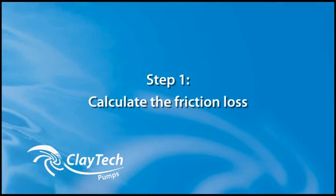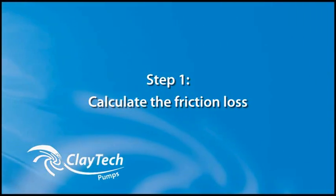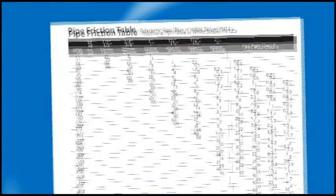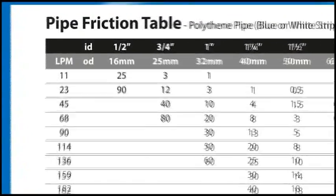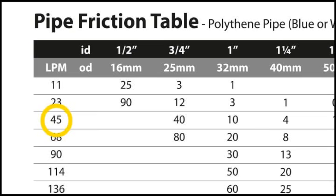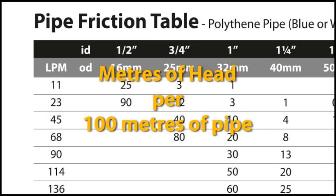The first step is to calculate friction loss. Remember, friction loss can be calculated using a pipe friction table. At 45 litres per minute, and using a pipe 3 quarter inch in side diameter, we can see that there will be 40 metres of pressure lost to friction. However, in this chart, all values apply to 100 metres of pipe.